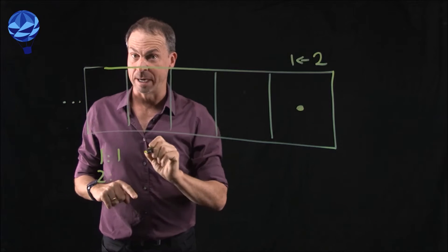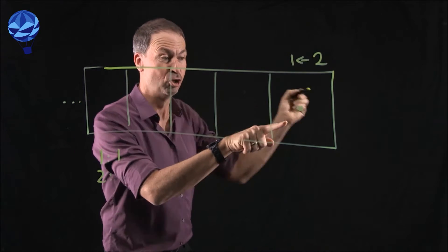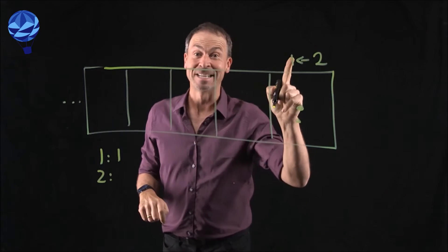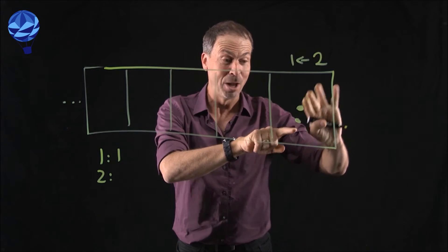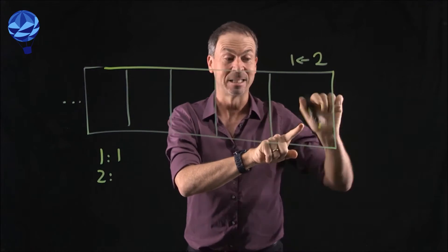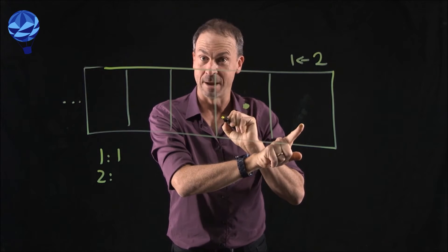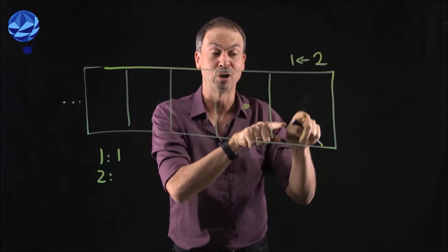However, put in a second dot in the machine, always the rightmost box, zoom. Then something exciting happens because whenever there are two dots in a box, they explode. Kaboom! And are replaced by one dot, one place to the left. Hence the name 2-1 machine.